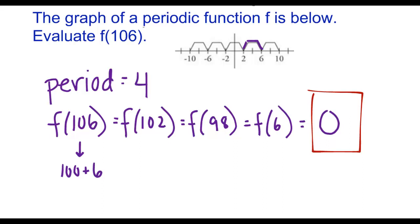f of 106 is the same as f of 6, which is the same as 0. So recognizing that pattern saved us a lot of graphing. I don't want to have to graph that really far out. I just used the pattern to my advantage.